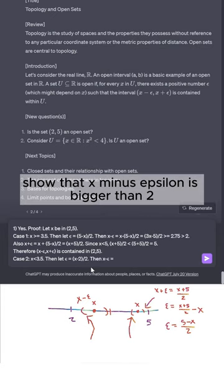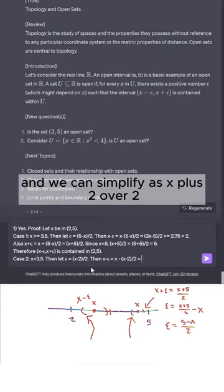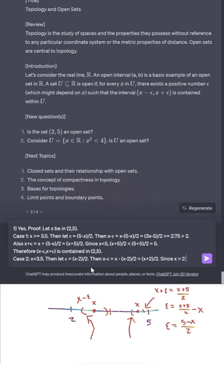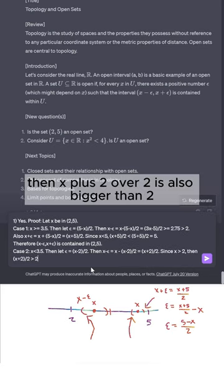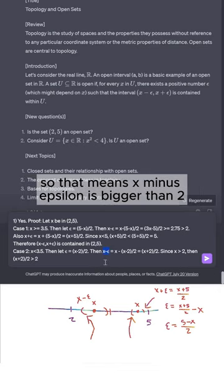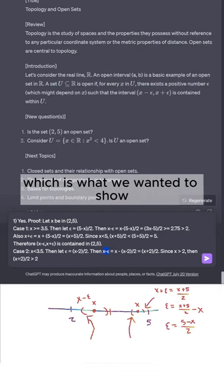Next, we can show that x - epsilon is bigger than 2 by plugging epsilon in. We can simplify as (x + 2)/2. Since x is bigger than 2, then (x + 2)/2 is also bigger than 2. So that means x - epsilon is bigger than 2, which is what we wanted to show.